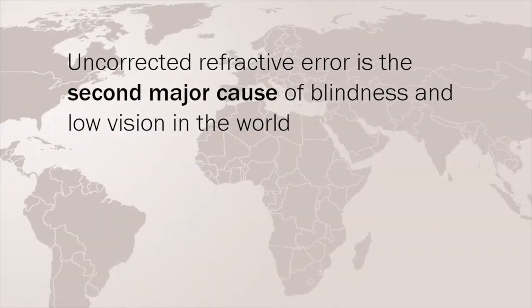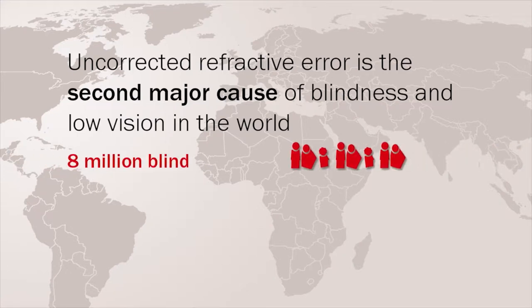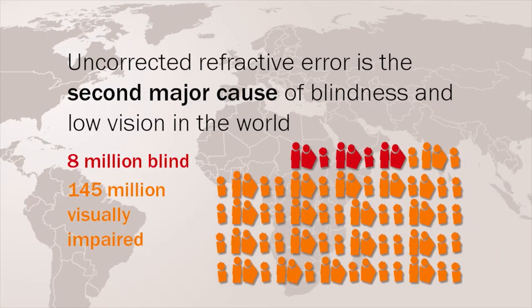Uncorrected refractive error is the second major cause of blindness and low vision in the world, after cataract. Estimates from 2004 indicate that over 8 million people are blind, and 145 million are visually impaired because they lack refractive correction.